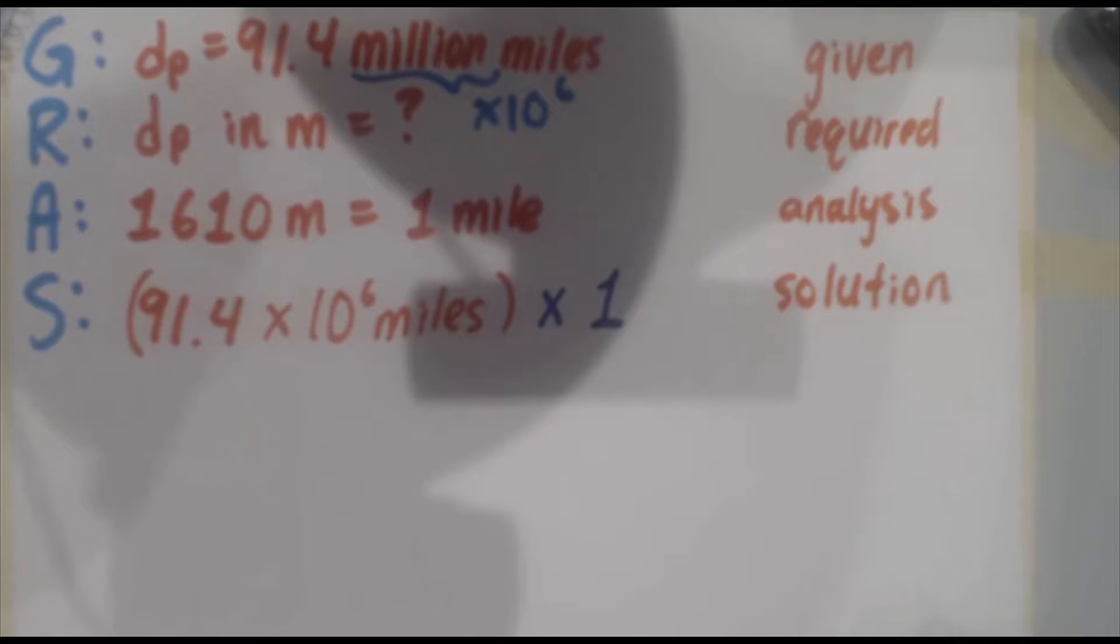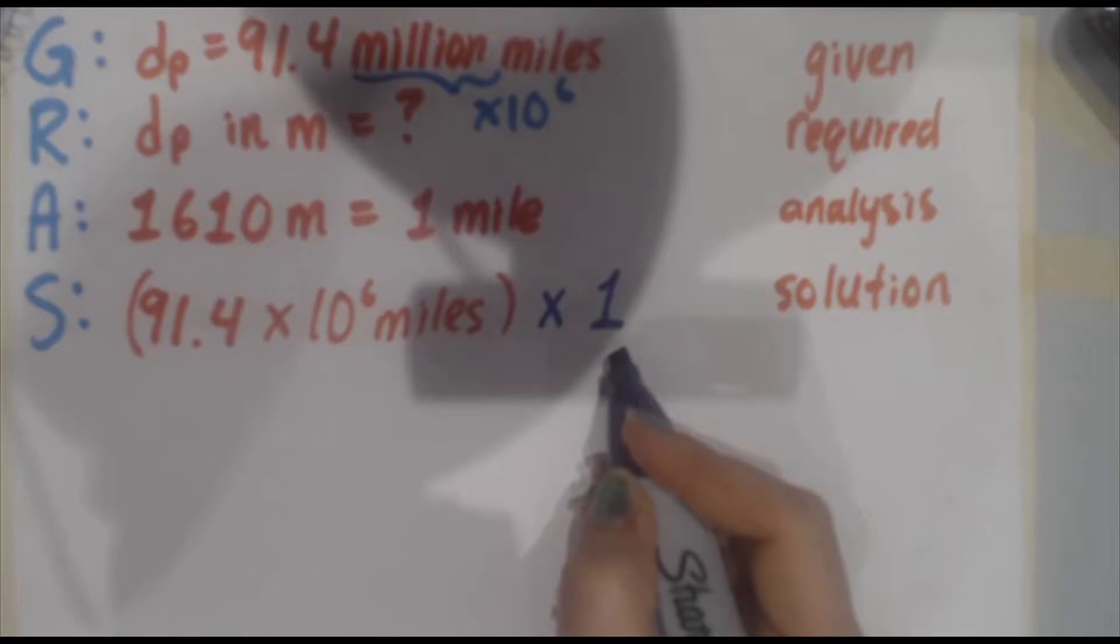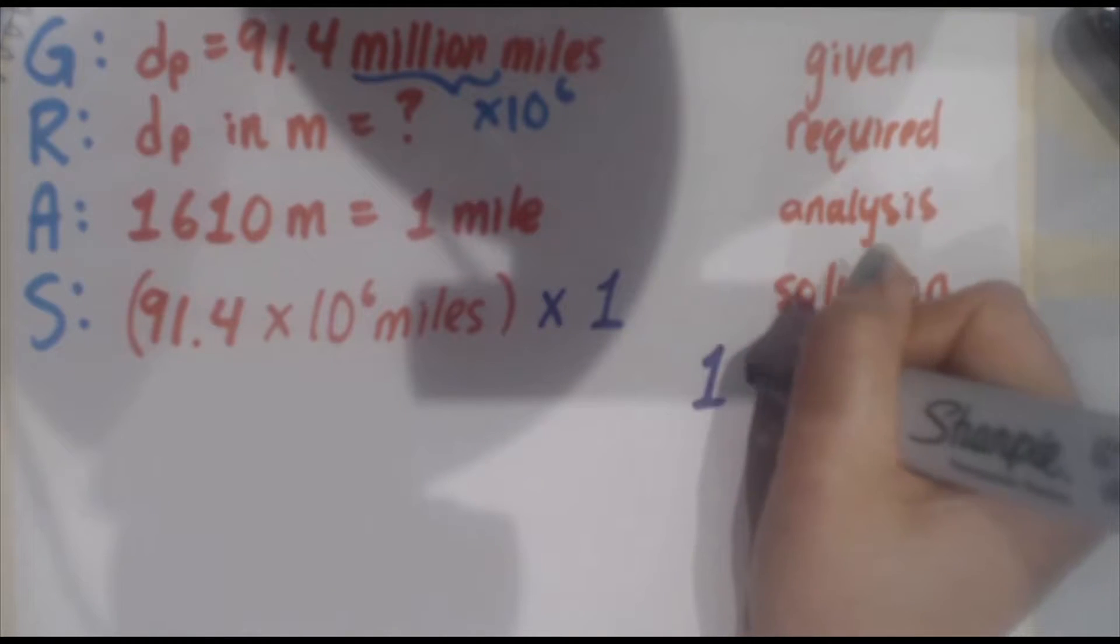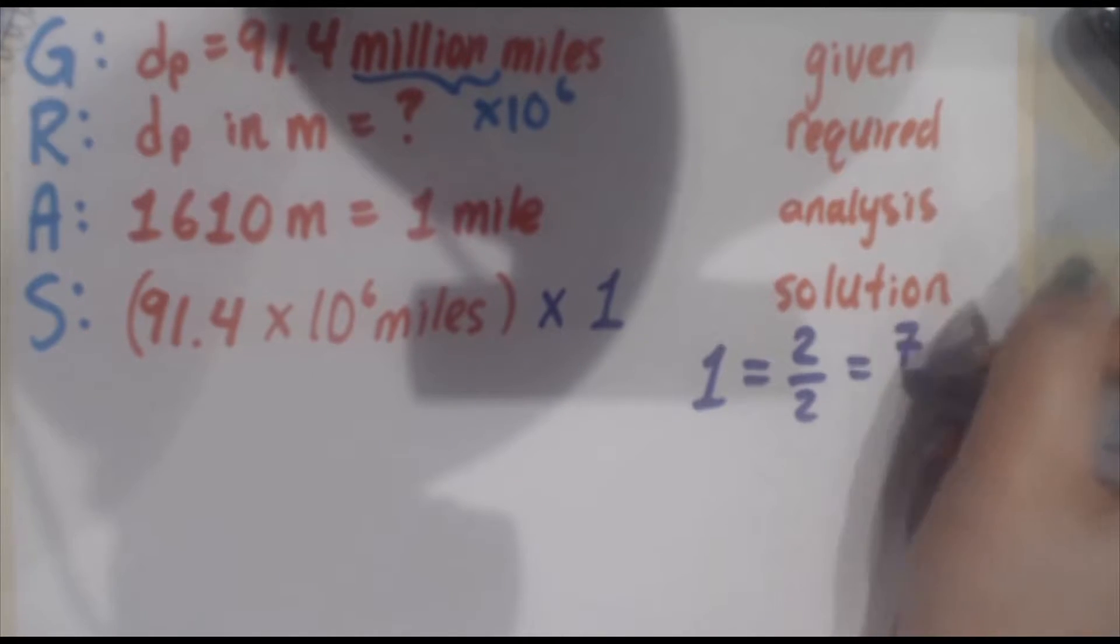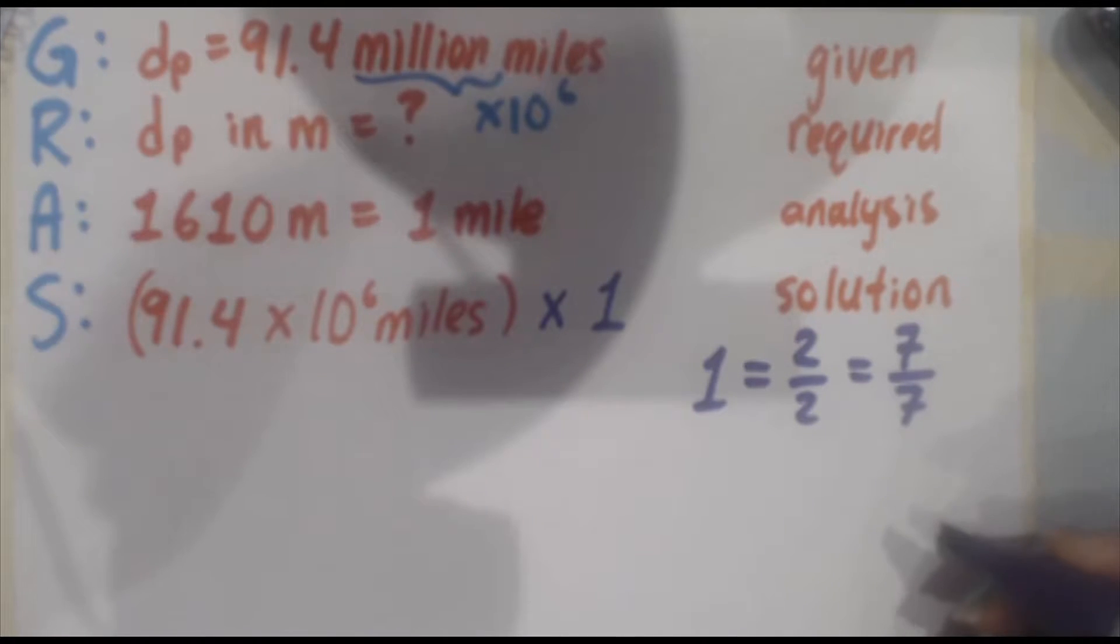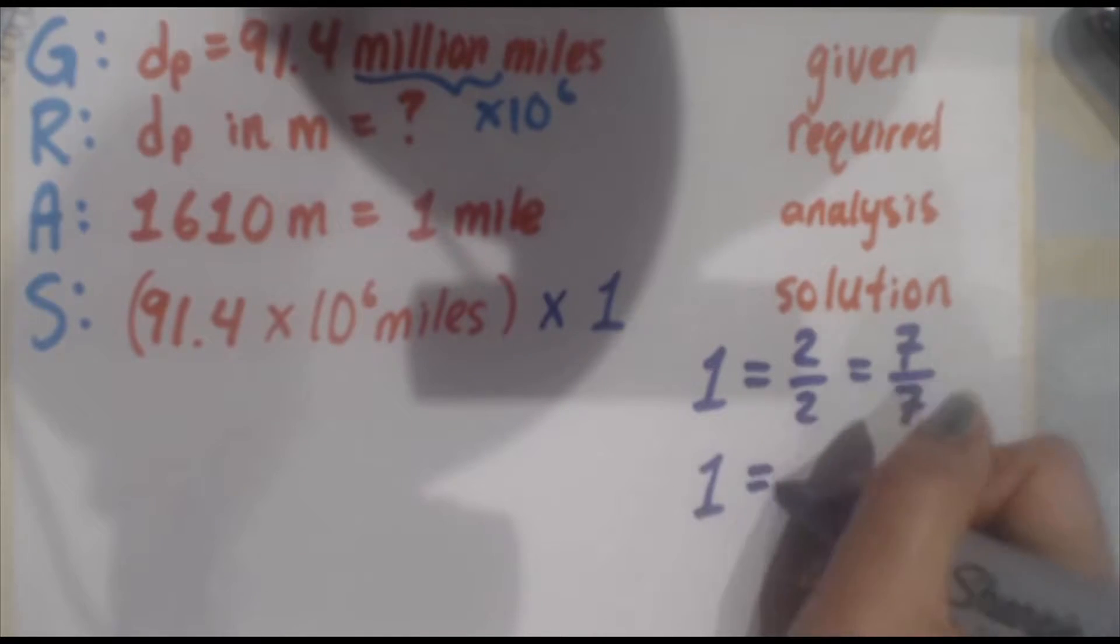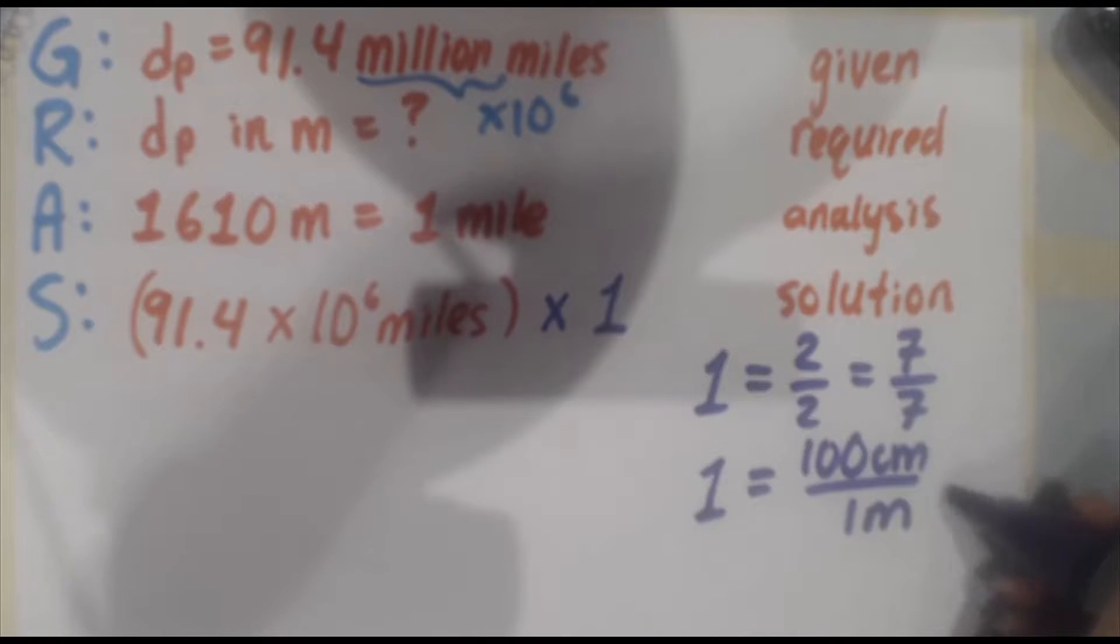So the next step in this trick is to multiply the given number by one. This is a nice way to convert units. Now you might wonder why would I multiply by one? I've got two reasons for you. The first is if you multiply by any other number, you're going to change the question, thereby changing the answer and the accuracy. The second is, let's figure out how can we write one in a few different ways. One can be rewritten as a fraction, 2 over 2, 7 over 7. But did you ever stop to think that you can write 1 as 100 centimeters over 1 meter?